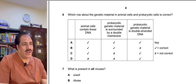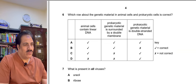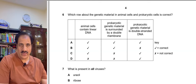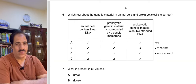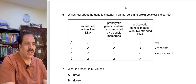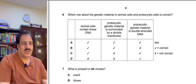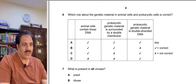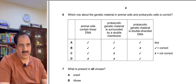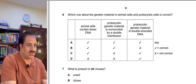Question 6 asks which statement about genetic material in animal cells and prokaryotic cells is correct. Animal cells, being eukaryotes, contain linear DNA. Prokaryotes contain circular DNA. Prokaryotic genetic material is not surrounded by a double membrane — prokaryotes have no nucleus. DNA is double-stranded even in prokaryotes, so the correct answer is option C.